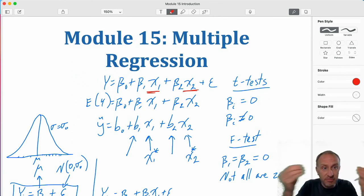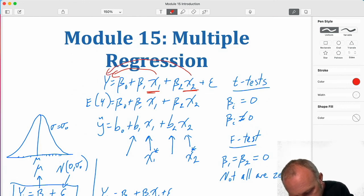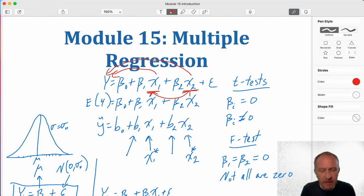Multicollinearity is a problem that exists if I have two variables or more that are highly correlated with each other. In this regression model, we expect each of our, or we want, we hope, each of our independent variables to be correlated with Y.